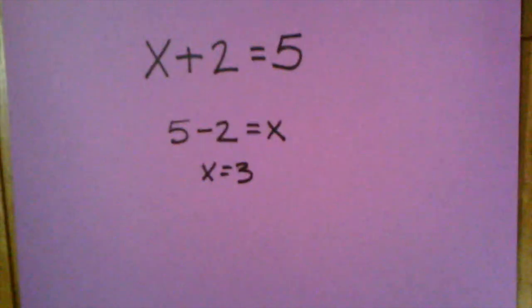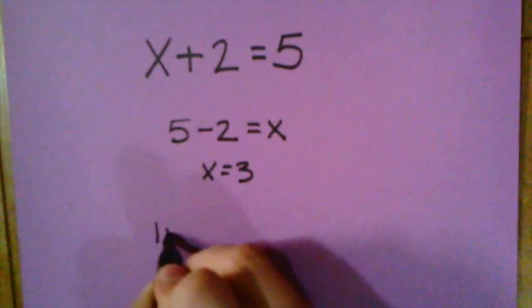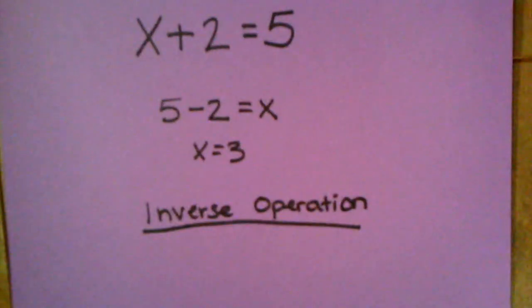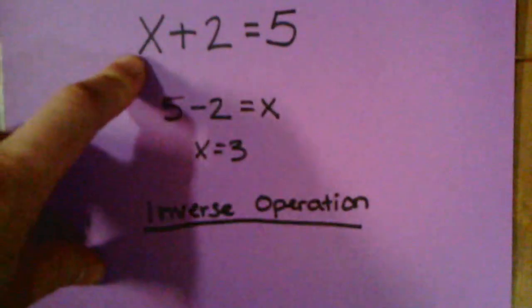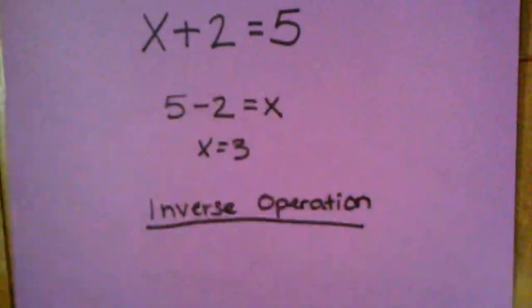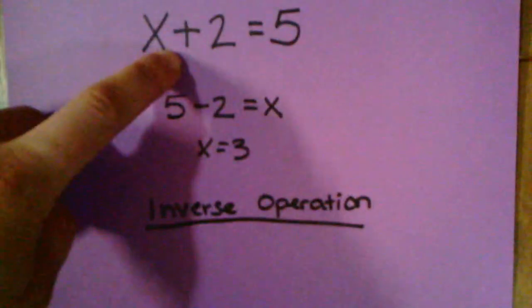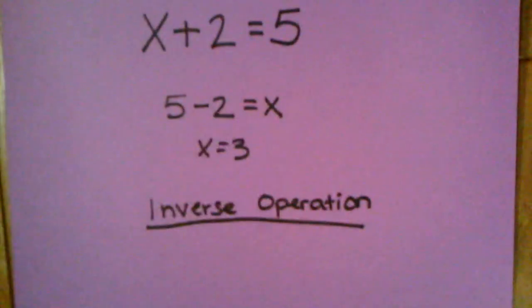Using an inverse operation is actually a really good algebraic way of solving equations, especially once they get more complicated. What exactly is an inverse operation? An inverse operation is actually just a fancy way of saying that we're using the opposite operation. Just like we did up here when we saw X plus two equaling five and we thought about using subtraction to help us figure out what X is, we actually used the inverse of addition, which is subtraction, to help us figure out that X equals three.